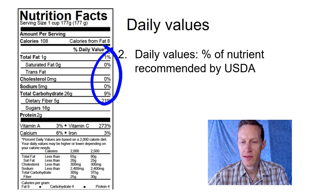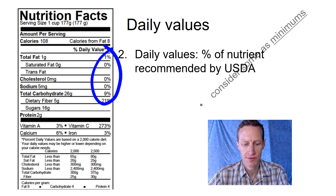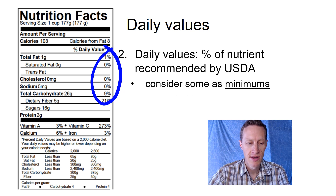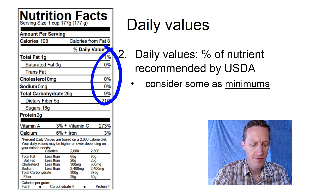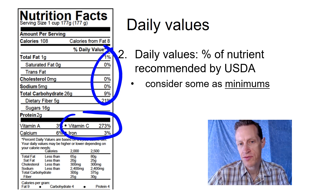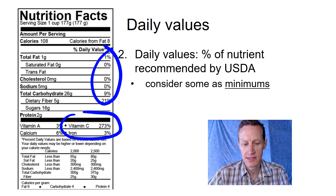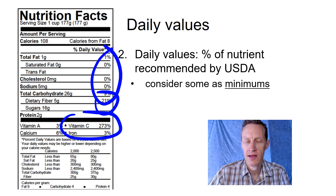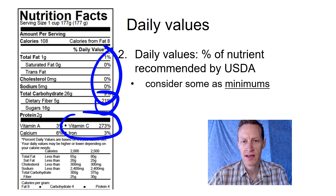But the way that we look at these percents is not the same from nutrient to nutrient. Some of these should be considered minimums. For example, vitamins — it's okay if you get more than 100% vitamin C in a day. Or fiber — we can get more than the recommended daily intake of fiber a day, and that's okay.